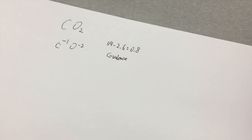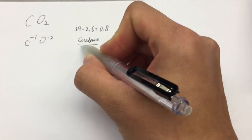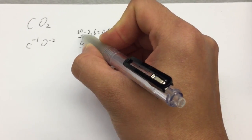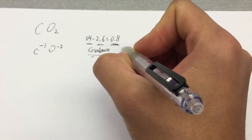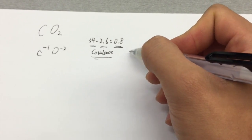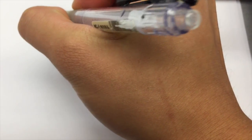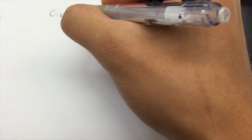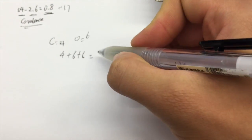Now let's talk about how to draw the Lewis diagram for a covalent compound: carbon dioxide. Let's start by determining why it's covalent. The electronegativity of oxygen is 3.4 and carbon is 2.6, so the difference is 0.8, which is smaller than 1.7 — so it's covalent. First, we count all valence electrons: carbon has 4, oxygen has 6. The total is 4 + 6 + 6 = 16 electrons, since we have two oxygens.